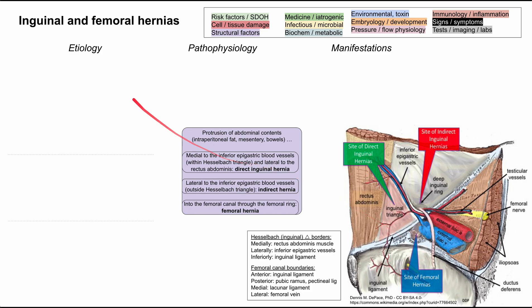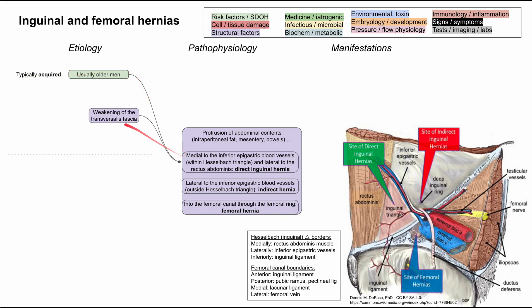Now it's worth thinking through the etiology of each of these hernias to help you differentiate them, and you might be able to differentiate them based on your patient population and risk factors. First, let's start with the direct inguinal hernia. This typically happens in older men, and it's usually an acquired problem — usually these older men aren't born with it; it's something they acquire over life.